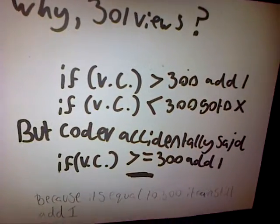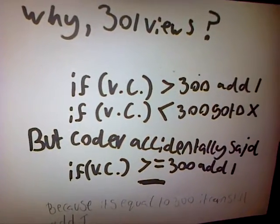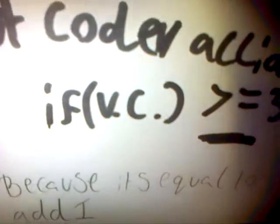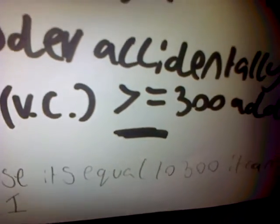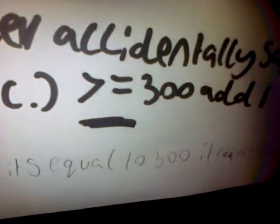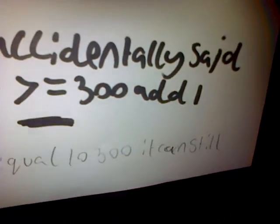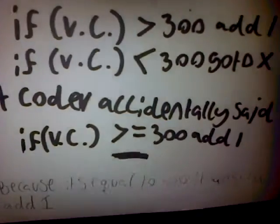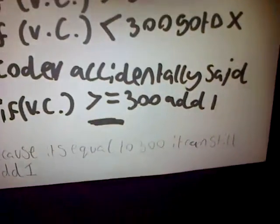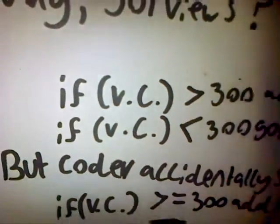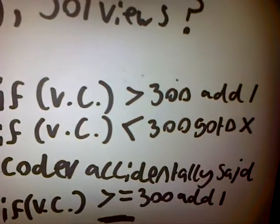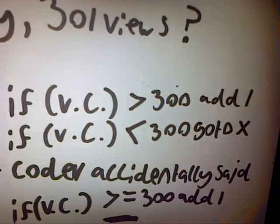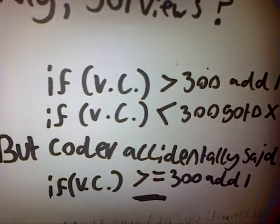Basically, VC stands for view count. So if view count is less than or equal to 300, add 1. See, that's the problem — equal to. That's what the code had put. It should be: if VC, view count, is less than 300, add 1. And then it will go up to 300.